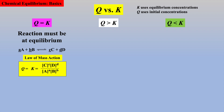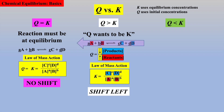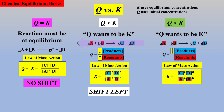If Q is equal to K, then the reaction is at equilibrium and there will be no shift. If Q is greater than K, then for Q to become K, the numerator must become smaller and the denominator bigger — product concentration needs to decrease and reactant concentration needs to increase. If Q is less than K, then for Q to become K, the numerator must become larger and the denominator smaller — product concentration needs to increase and reactant concentration needs to decrease. Thus, the reaction will shift to the right.